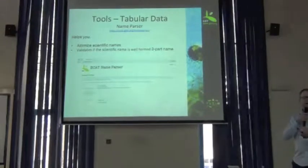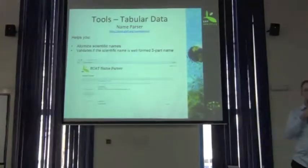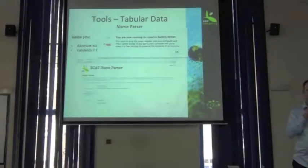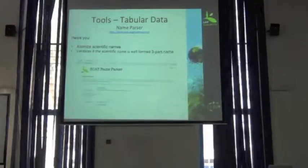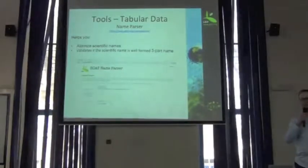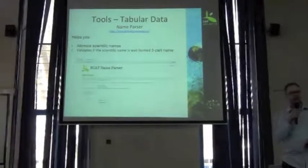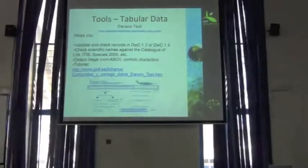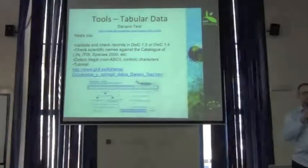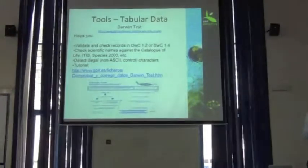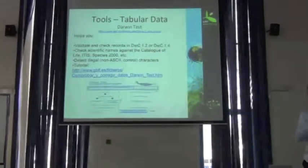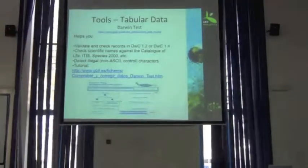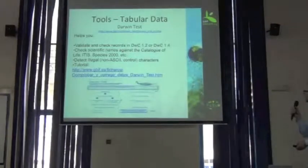Imagine you've got tabular data with some taxon names in it, and you want to find out whether or not you've used the correct format for those names. We've got NameBox, which helps you atomize scientific names into their different parts and make sure you're using the correct format — we've got a demonstration of this tomorrow. There's also Darwin Test, which is quite unique in that it's one of the only tools to help you actually analyze the content inside a tabular dataset using Darwin Core terms. The only problem is that it doesn't use the newest Darwin Core terms; it uses the pre-standard Darwin Core 1.2 or Darwin Core 1.4.